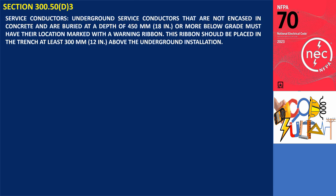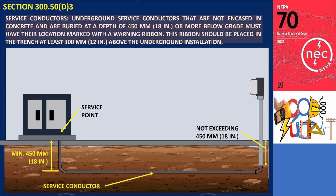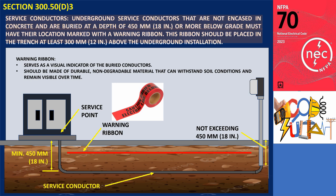Section 300.5(D.3), Service Conductors: underground service conductors that are not encased in concrete and that are buried 450 millimeters (18 inches) or more below grade shall have their location identified by a warning ribbon placed in the trench at least 300 millimeters (12 inches) above the underground installation. This ensures safety and prevents accidental damage during future excavation or construction activities. A warning ribbon serves as a visual indicator of the buried conductors, made of durable, non-degradable material that can withstand soil conditions and remain visible over time, alerting anyone digging in the area to the presence of the buried conductors.